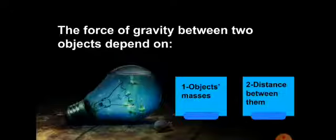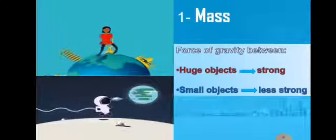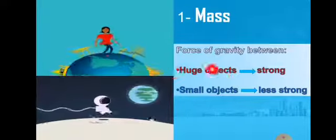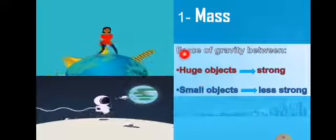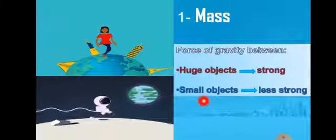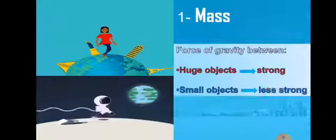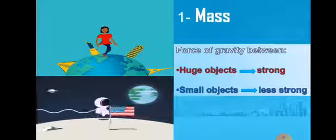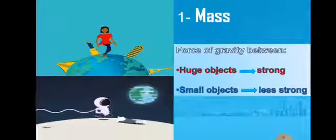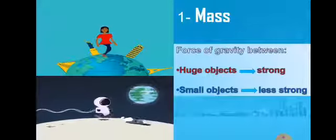The force of gravity depends on two things: the masses of the objects and the distance between them. If the objects have big masses, there will be a strong force of gravity. If the objects have small masses, they will have a weak force of gravity between them.